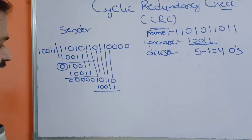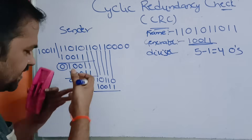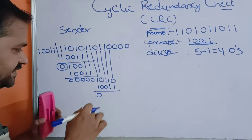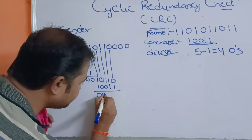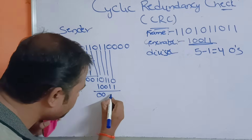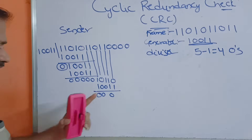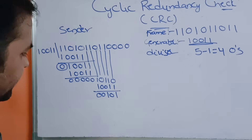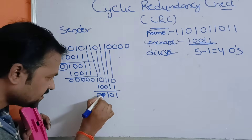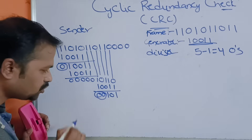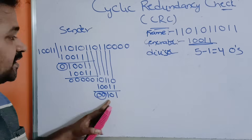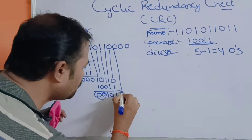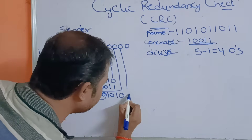Performing XOR on 1 0 1 1 0 and 1 1 0 0 1: 1 1 = 0, 0 0 = 0 — both same; 1 1 = 0 — same; 1 0 = 1 — different; 0 1 = 1 — different. Result is 0 0 0 1 1. We have 2 leading zeros, so we reject them. We have 3 bits remaining but the divisor is 5 bits, so we take 2 more zeros from the message and copy them here.